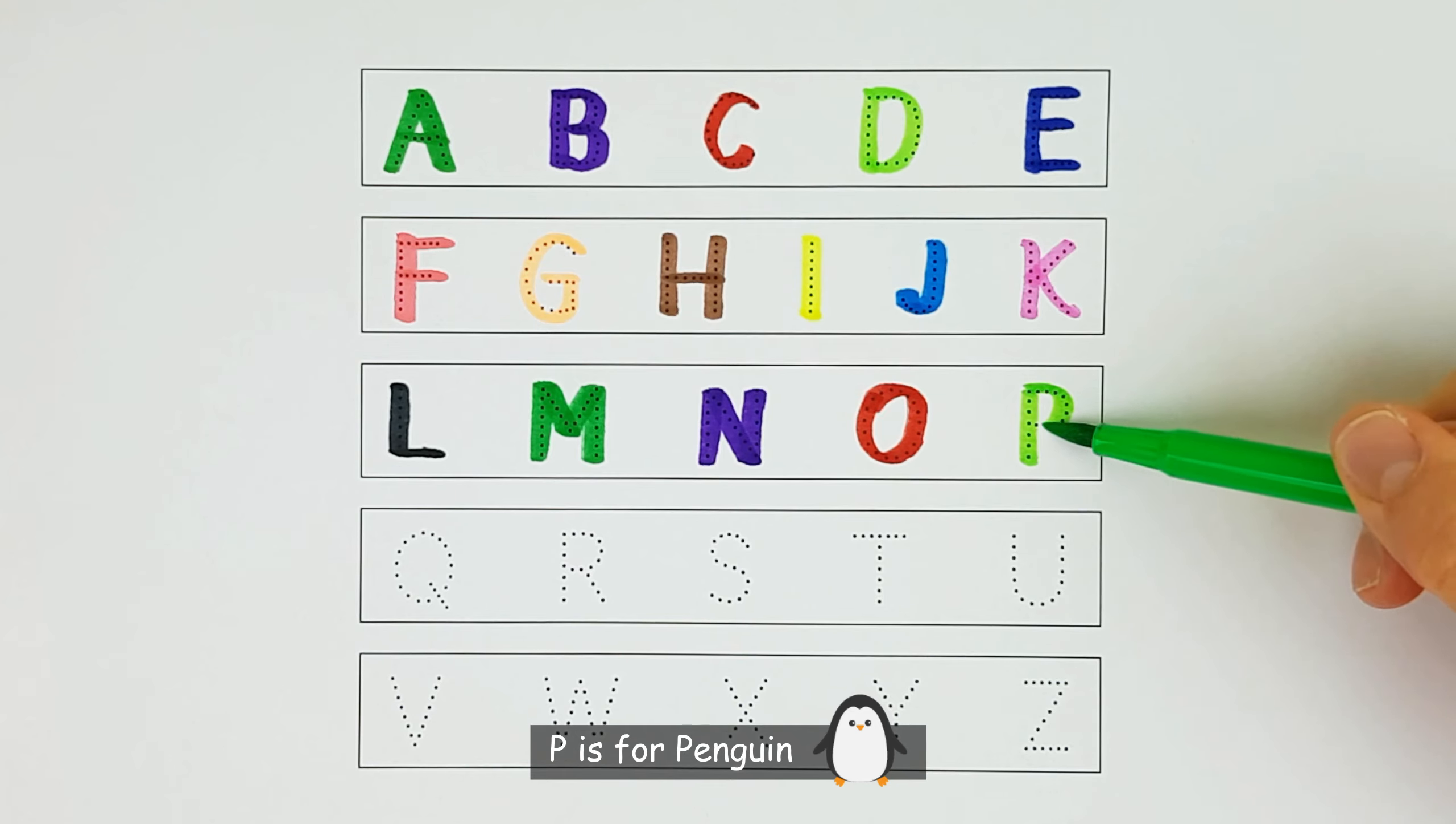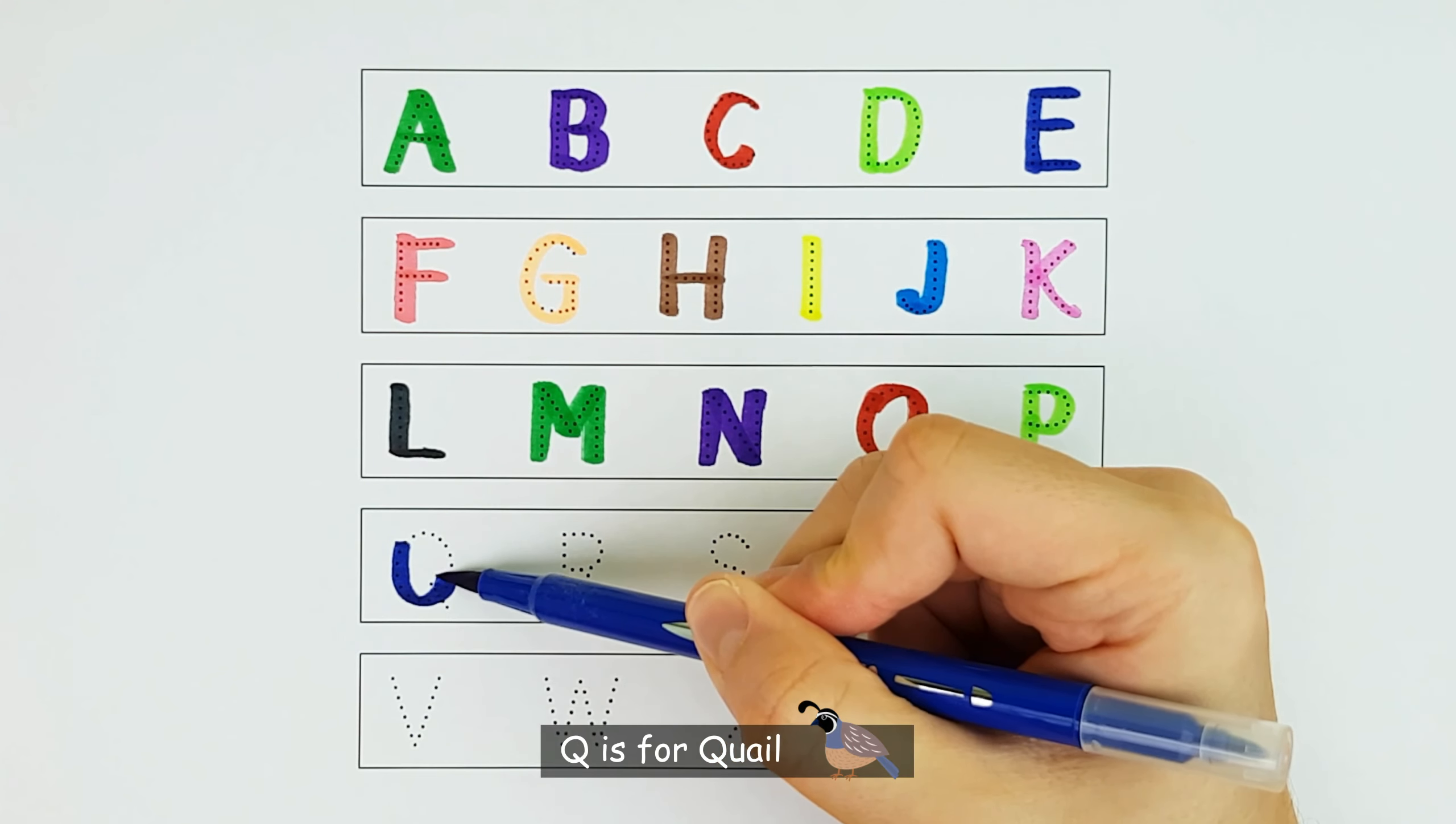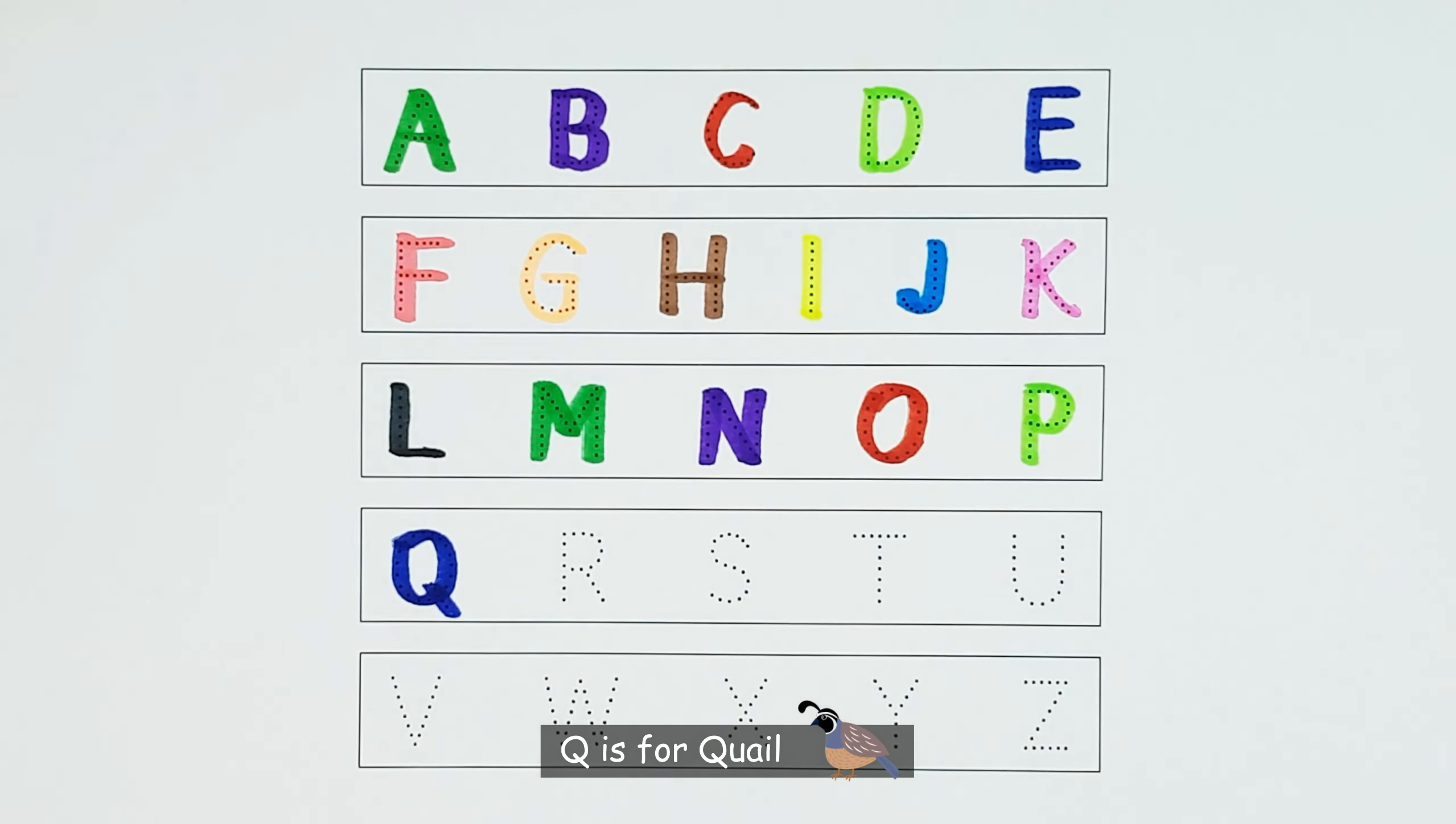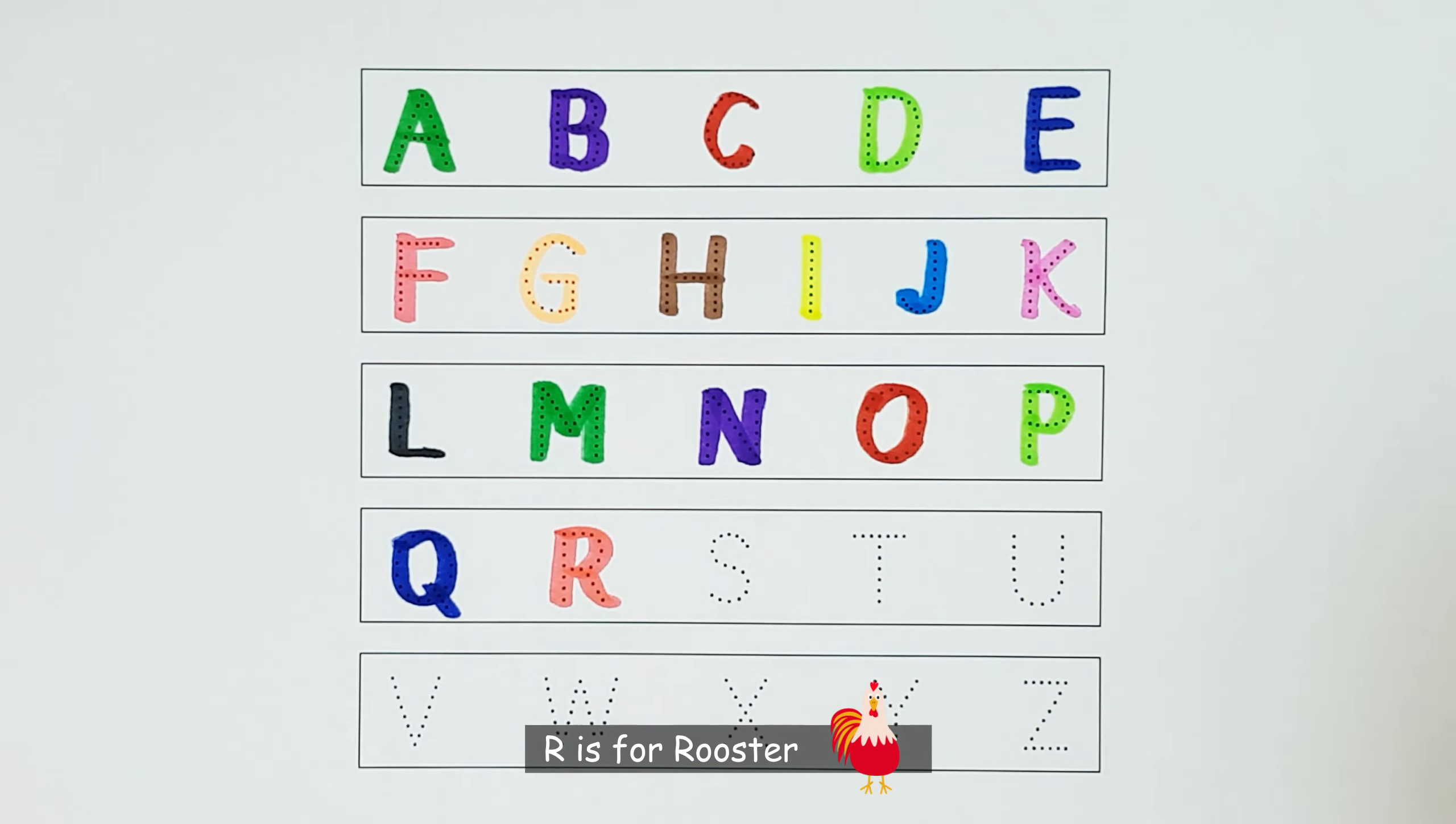P. P is for Penguin. P. Q. Q is for Quail. Q. R. R is for Rooster. R.